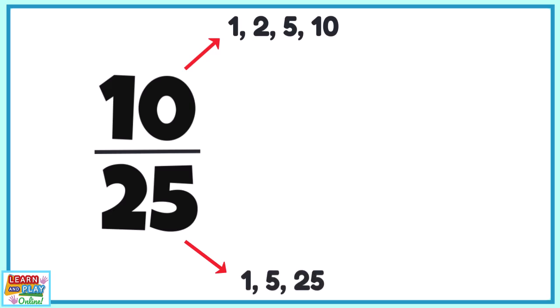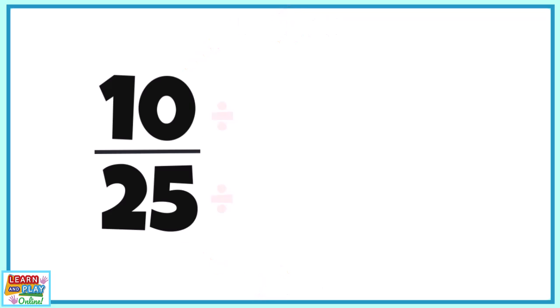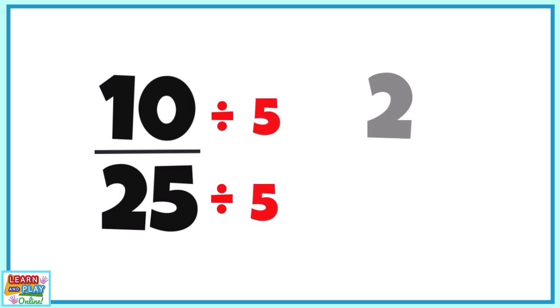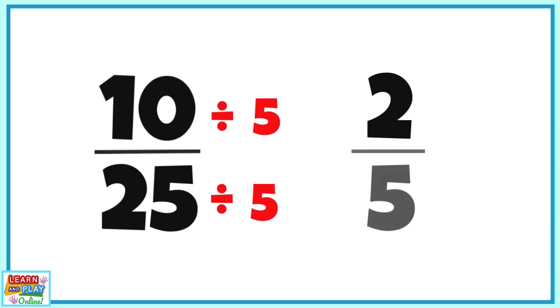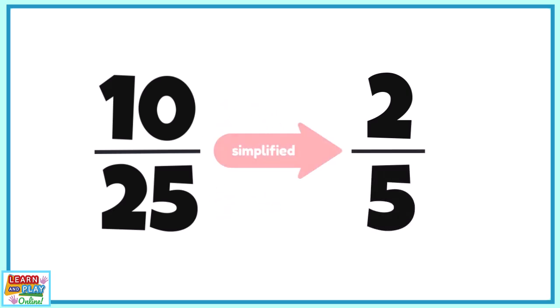We can see that the highest common factor is the number 5. Now that we know the highest common factor, the next step is to divide both the numerator and denominator by 5. 10 divided by 5 is 2, and 25 divided by 5 is 5. So 10 over 25, when simplified, is 2 over 5, or 2 fifths.